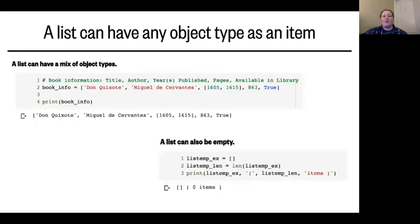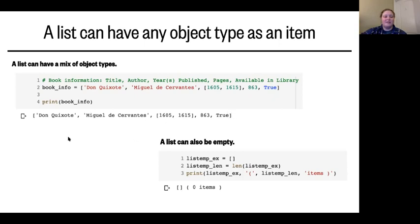A list doesn't have to contain all the same kind of object — you can mix and match. For example, here I've created a list of book information about Don Quixote: the title, the author Miguel de Cervantes, the years published (1605 and 1615 as a nested list since it was published in two parts), the number of pages (863), and whether it's available in the library (true). A list can also be empty — just empty brackets — and its length would be zero.